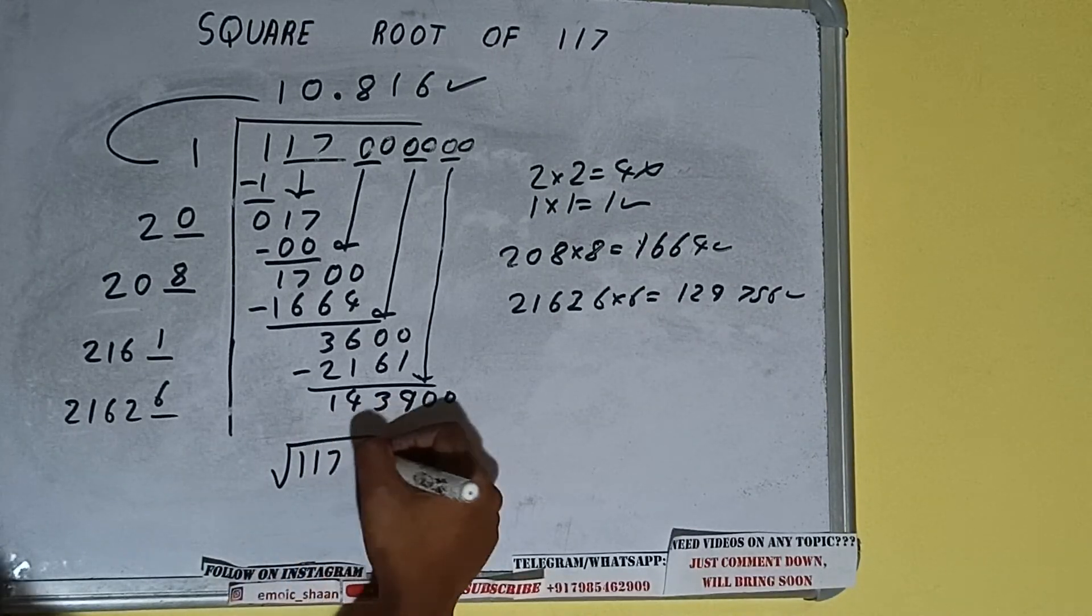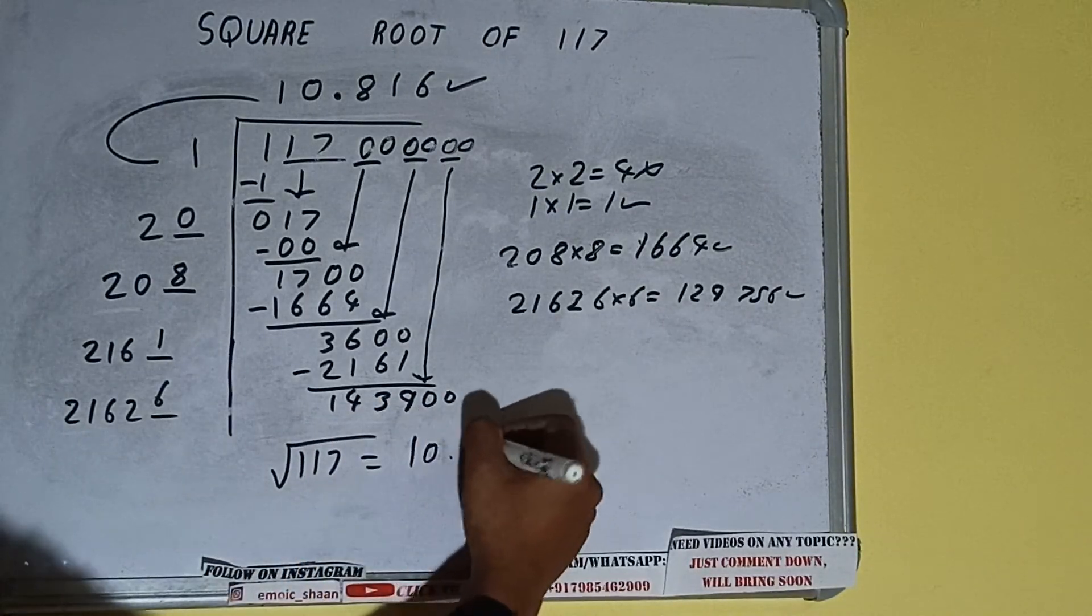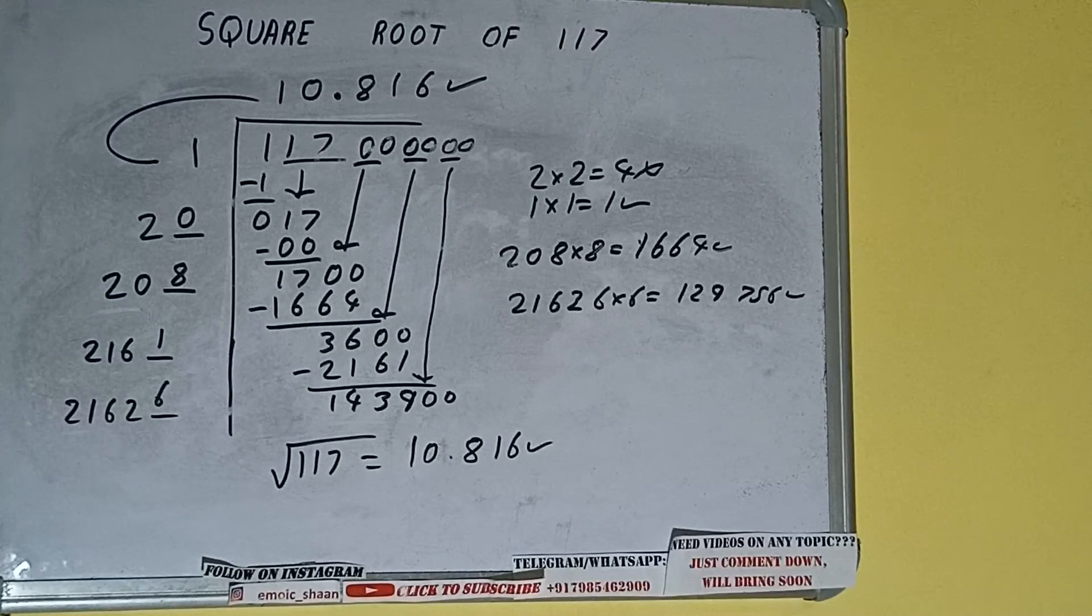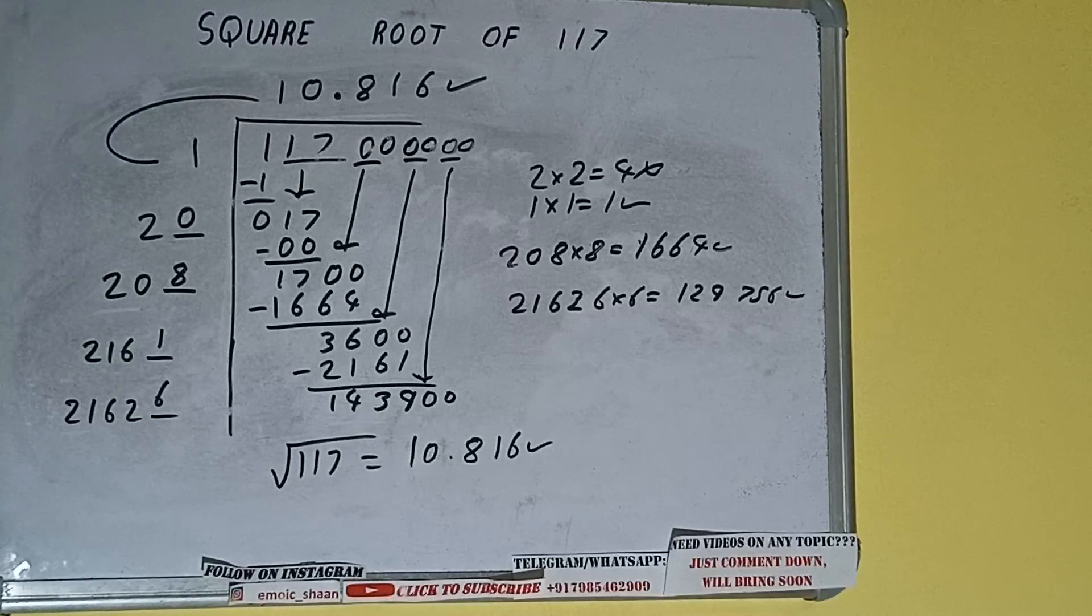So square root of 117 will be 10.816, that will be the answer. So this is all about square root of 117. If you found the video helpful please don't hit the like button. Do consider subscribing and thanks for watching.